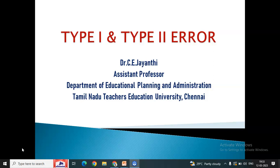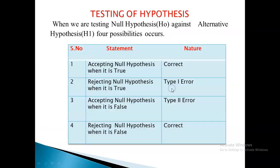Today we are going to discuss about Type 1 and Type 2 error in statistical hypothesis testing. In this, we have four different types of possibilities when a null hypothesis is tested against an alternative hypothesis.